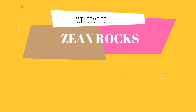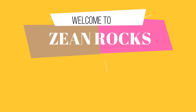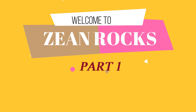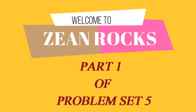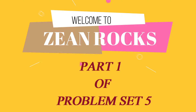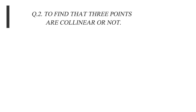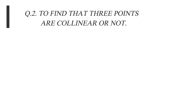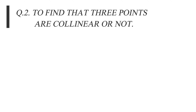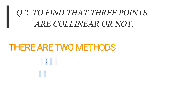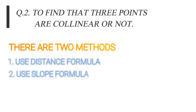Hello everyone. This lecture is about part 1 of problem set 5, question number 2. We are asked to find out whether these 3 points are collinear or not. To find out whether they are collinear or not, there are 2 methods: the first method is the distance formula method, and the second method is the slope method.